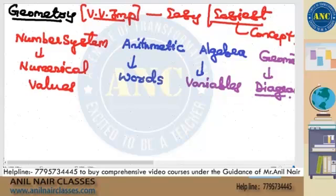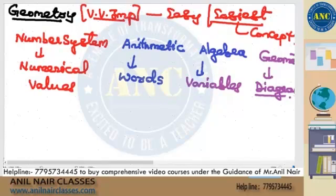A diagram will be given and we'll ask you — depending on the question — whether it is an angle, a side, an area, a perimeter, two sides, a third side, three sides perimeter, and so on. Number system is the representation of parameters using numerical values. Arithmetic is by using words. Algebra is by using variables. Geometry is by using diagrams.